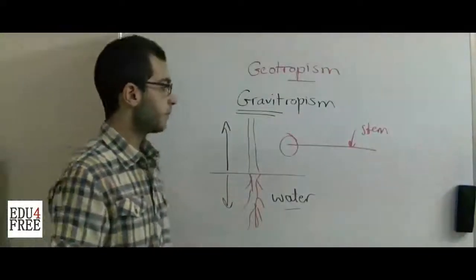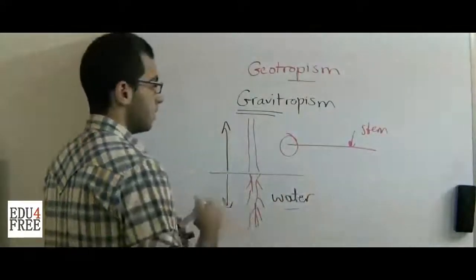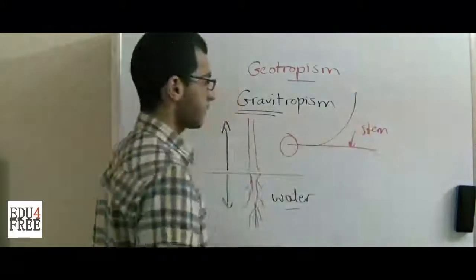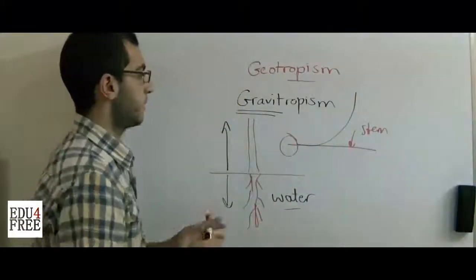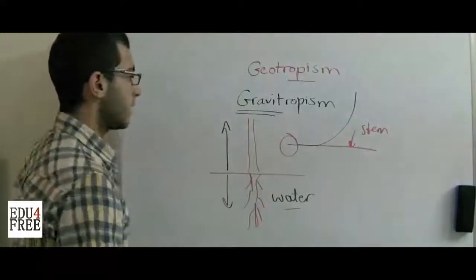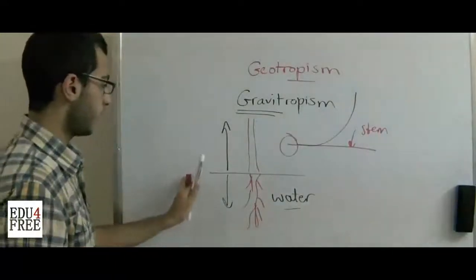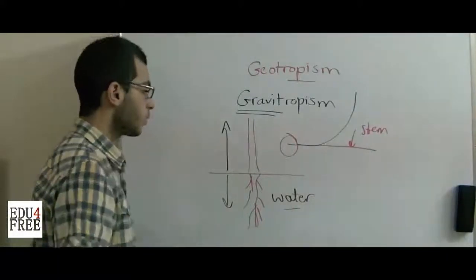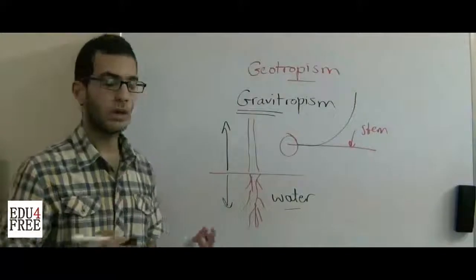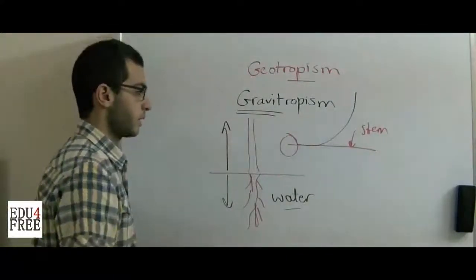As you can see, after the stem was growing horizontally, it begins to take a curve upwards. This is the effect of gravitropism. And as we saw earlier in the video, the root grew downwards even without water or soil, so that was also the effect of gravity.